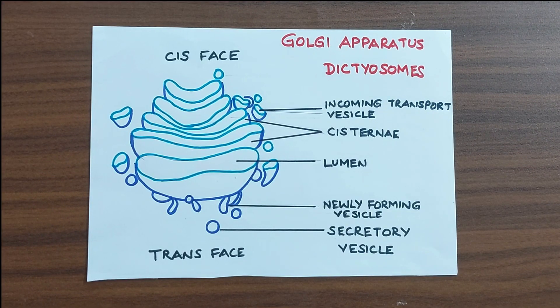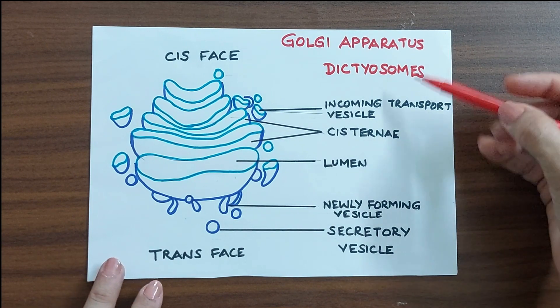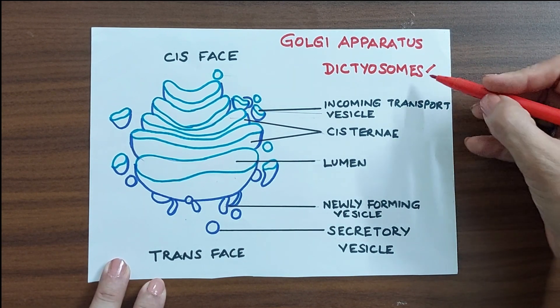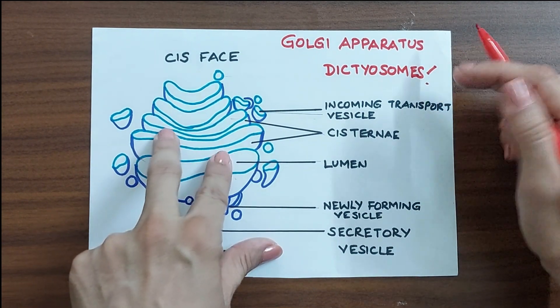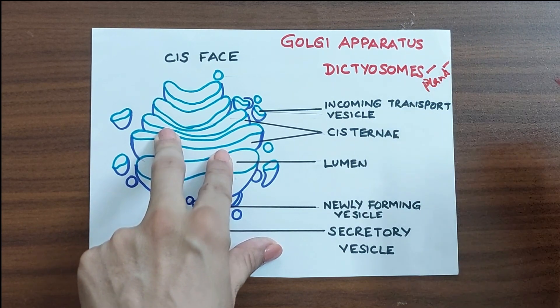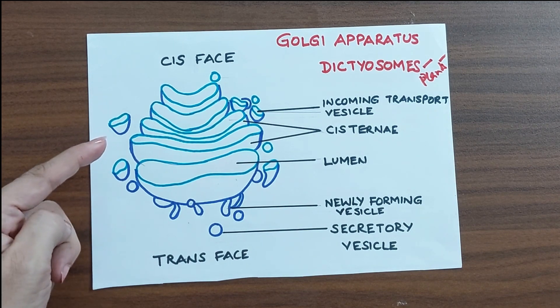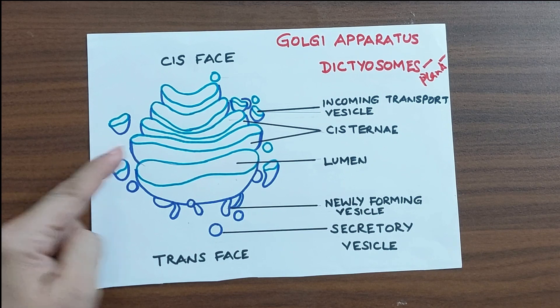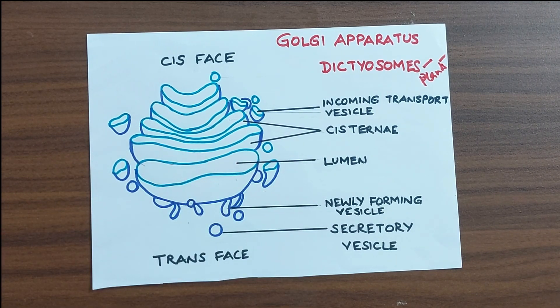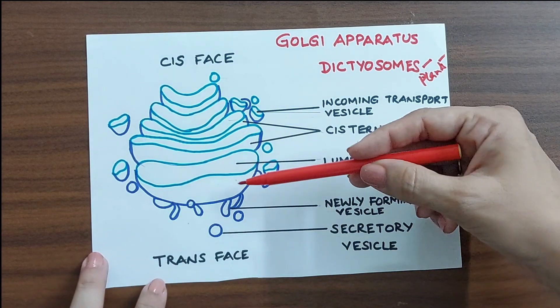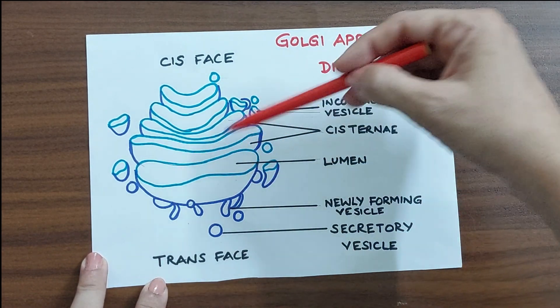Let us now see Golgi apparatus. Golgi complex was discovered by Camellia Golgi and hence the name. This Golgi apparatus is also known as dictyosomes in case of plant cells. And Golgi apparatus consists of a set of smooth flattened sacs. These sacs are known as cisternae and these cisternae are stacked one above the other, parallelly.